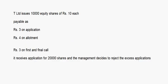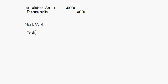After that come the normal entries for share allotment. Share Allotment Account debit to Share Capital Account — 10,000 allotted shares at rupee 4 allotment money equals 40,000 rupees. Then the receipt of allotment money: Bank Account debit to Share Allotment Account, also 40,000 rupees.